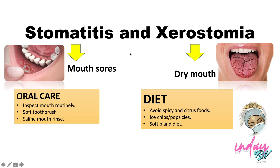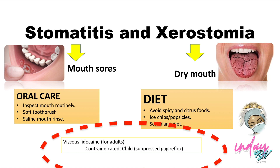Since we are speaking about the oral cavity, we also need to consider the patient's diet. Avoid spicy and citrus foods, use ice chips or popsicles, and give a soft, bland diet. You can also use viscous lidocaine for adult patients — it is a local anesthetic used to treat pain of a sore or irritated mouth. However, it is contraindicated in child patients because it may cause serious side effects or death in infants or children under 3 years old, as it affects the gag reflex. Consider the opinion of your medical provider before use.